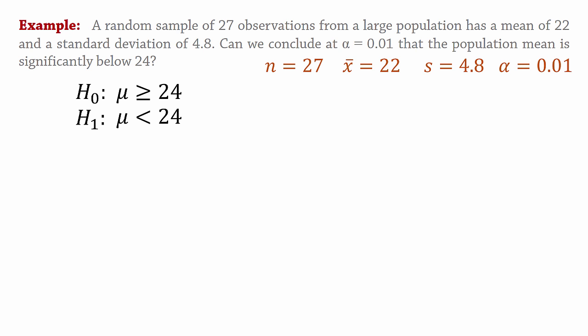The significance level alpha for this test is 0.01. Now this is a left tail test, so the critical or rejection region will be in the left tail of the distribution.